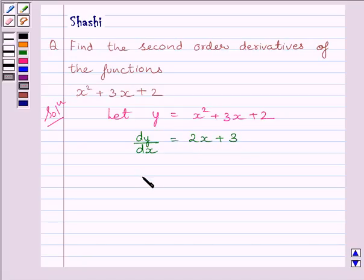Now again differentiating both sides with respect to x, we get d square y upon dx square is equal to 2.